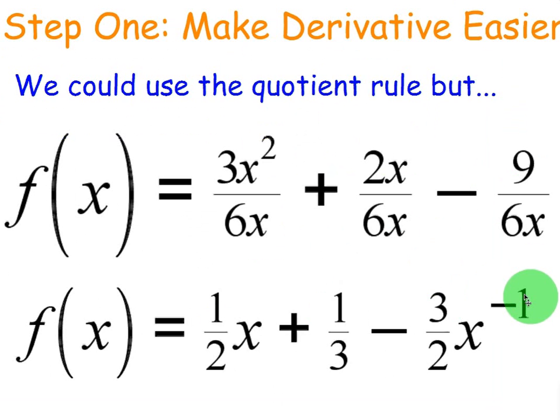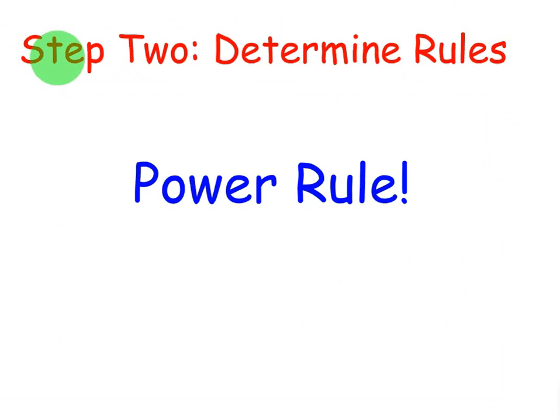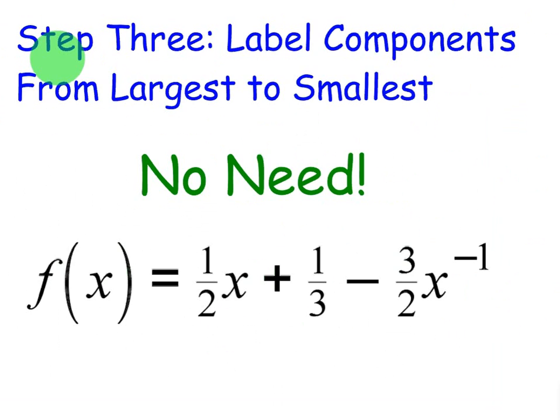That way we can easily apply the power rule. So now that's all we have to do. We don't have to do the quotient rule now that we've simplified it that way. We'll just use the power rule. We don't need to label components from largest to smallest because we can just use the power rule. So try to avoid complex derivatives - that's the gist of this example. If it doesn't have to be complicated, don't make it complicated.